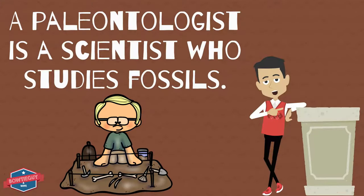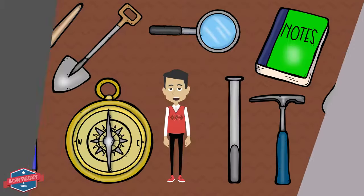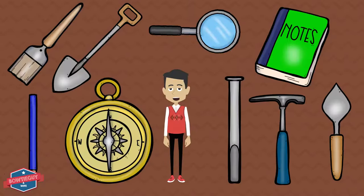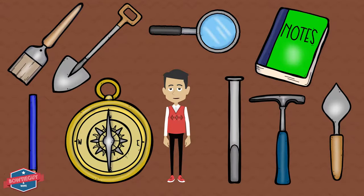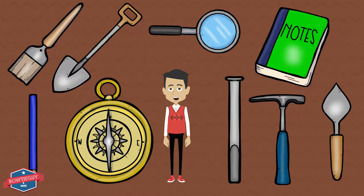A paleontologist is a scientist who studies fossils. What kind of tools does a paleontologist use? They use a brush, a shovel, a trowel, a chisel, a pick hammer, a magnifying glass, a book for notes and record keeping, a pencil, and a compass so they know where they're going.